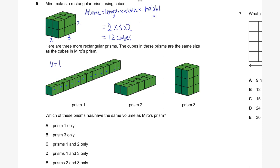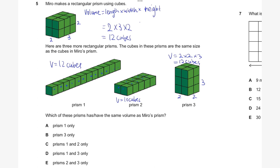Prism two: counting gives 2, 4, 6, 8, 10 cubes — that's only 10. Prism three: two across, two across, and three across, so volume is 2 times 2 times 3, which is 4 times 3 — also 12 cubes. So prisms one and three both have the same volume as Miro's rectangular prism. Our answer is D, prisms one and three only.